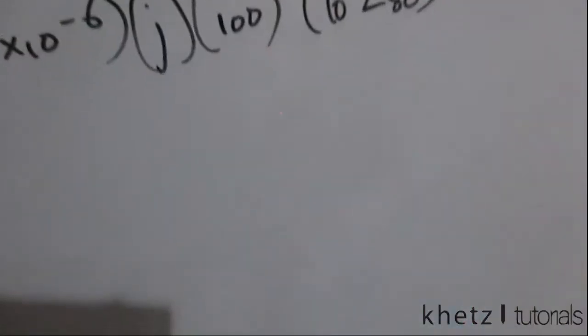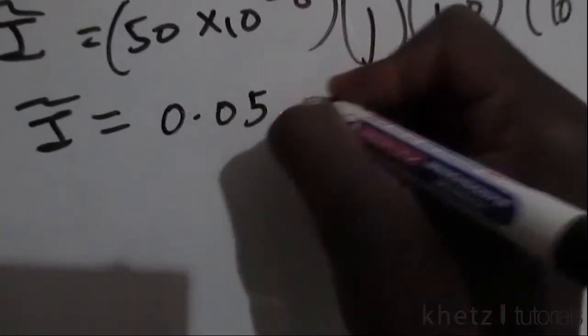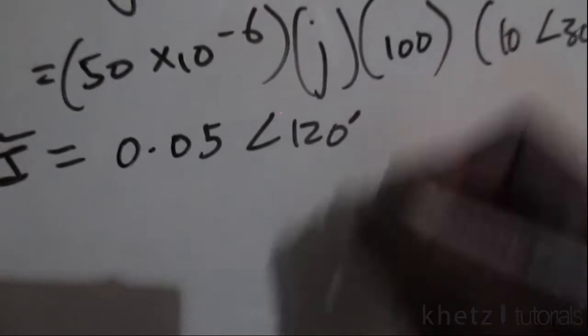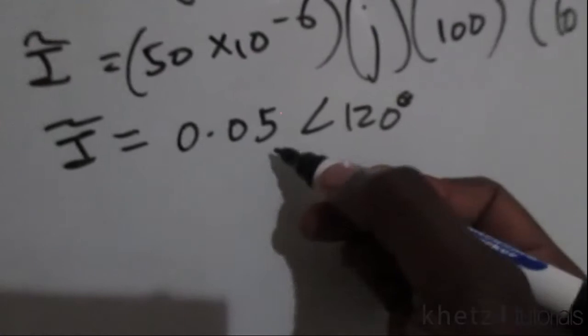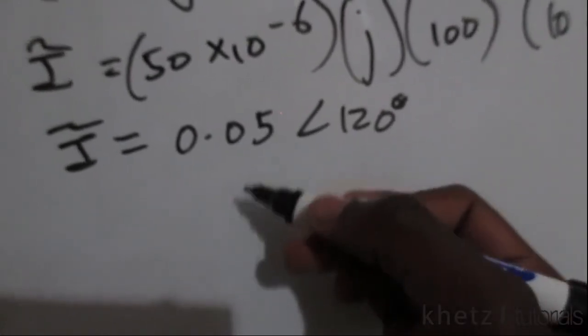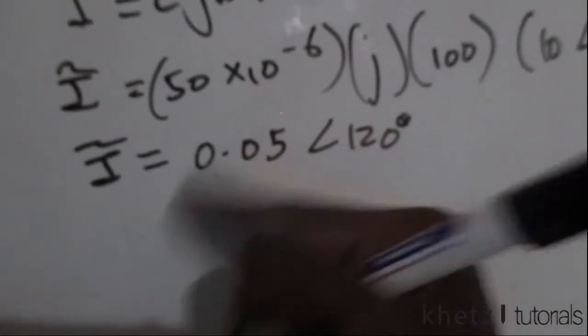Transform it into polar form and we have 0.05 with an angle of 120 degrees. We can transform this into milliamperes, so what would this be if we divide it by a thousand? This would be 50.